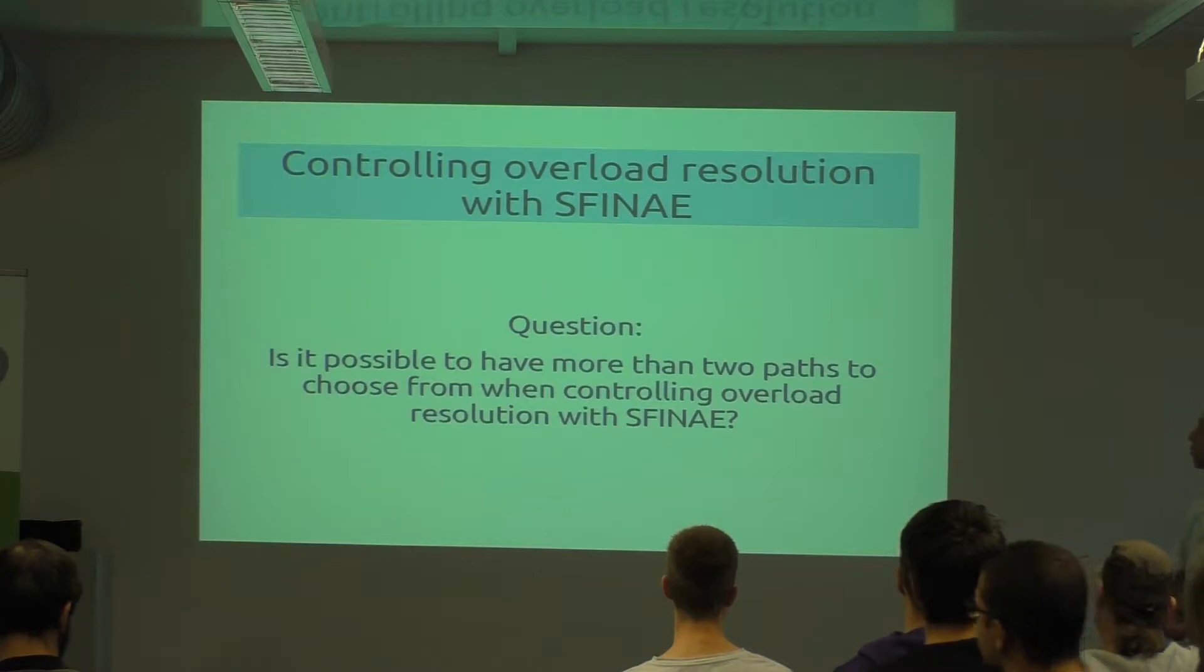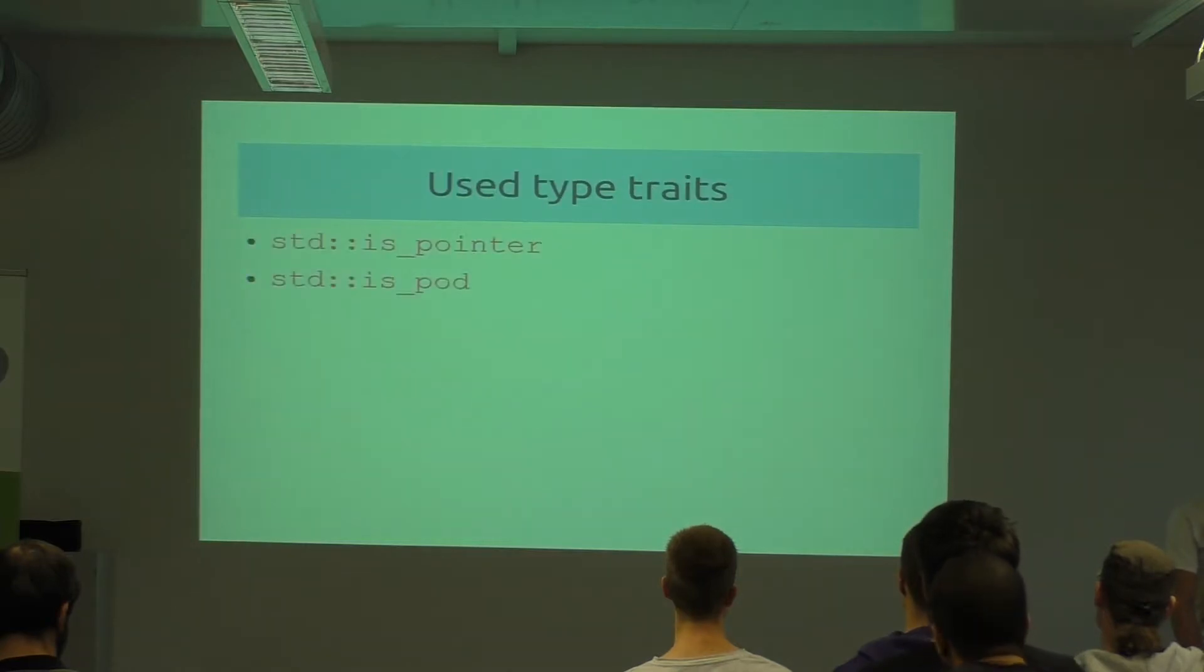So the question was: is it possible to have more than two paths to choose from when controlling overloads with SFINAE? To demonstrate this, I'm using a set of type traits: is_pointer and is_pod. I hope everybody knows them because we don't really have the time. The thing with this is if something is a pointer, it's also POD at the same time, so they're kind of overlapping.